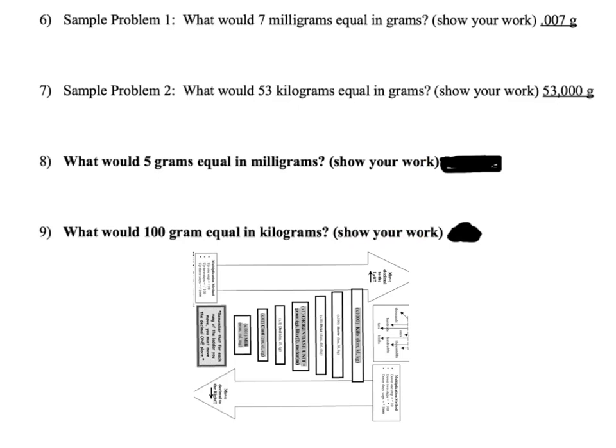Our first sample problem, seven milligrams, we want to know what that equals in grams. Just like before, step one, we're going to take known, in this case seven milligrams, and we got to figure out what we need to figure out in grams. Second step, we need to figure out which way we're going to be moving our decimal. We're starting down at milligrams, at the bottom, and we're moving up to grams. So we're moving up the ladder. If you go up the ladder, the decimal goes to the left.